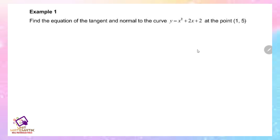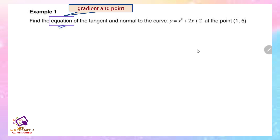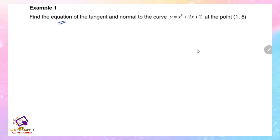Example 1: Find the equation of the tangent and normal to the curve y = x² + 2x + 2 at the point (1, 5). To find the equation, we must have the gradient and the point. For this question, the point is already given, so we proceed with finding the gradient.